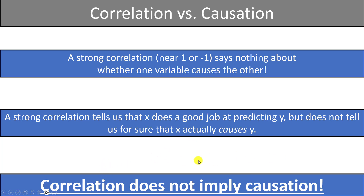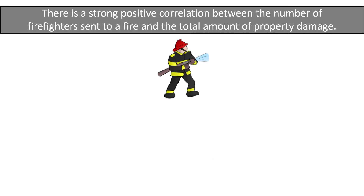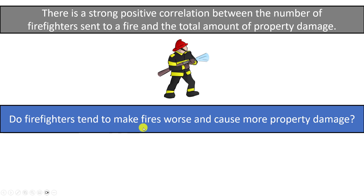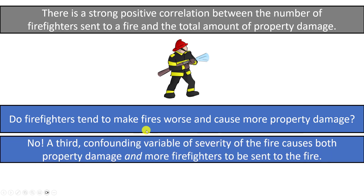There is a strong positive correlation between the number of firefighters sent to a fire and the total amount of property damage — more firefighters tend to coincide with more damage. Does this mean firefighters are causing more damage? No. There is a confounding variable: how severe the fire is. A more severe fire causes us to send more firefighters and also causes more damage. It's not the firefighters causing the damage — it's a third confounding variable causing both.